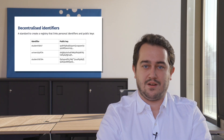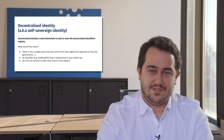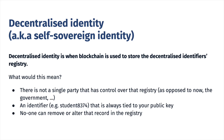What are decentralized identifiers? Well, this is a standard to create a registry that links personal identifiers and public keys. What is decentralized identity? This is when blockchain is used to store a decentralized identifiers registry, meaning that there is not a single party that has control over the registry, as opposed to now the government. However, even though the government does not control that registry anymore, the system does assume that the government uses verifiable credentials to prove that you are in fact you, and that those verifiable credentials can be revoked. Of course, this only shifts the problem — if we assume it would be a problem — from the registry to the issuing of verifiable credentials.